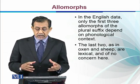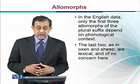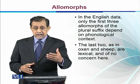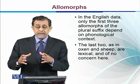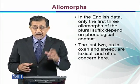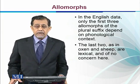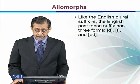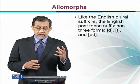The last two, as in 'oxen' and 'sheep', are lexical and of no concern here. We are actually talking about those morphemes which have a certain place or which are variations of a single morpheme, and we call them allomorphs — like the English plural suffix.